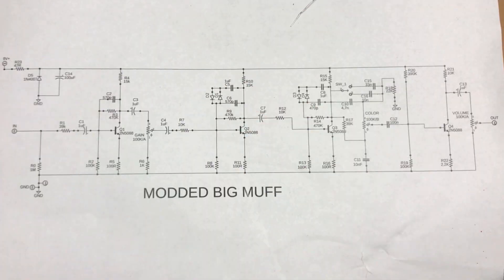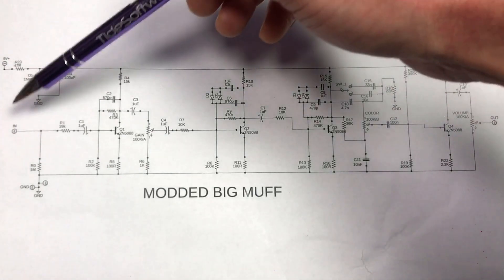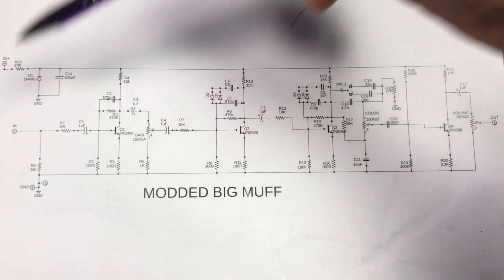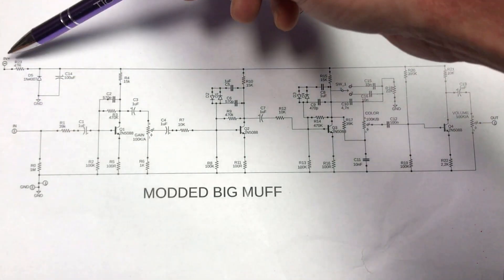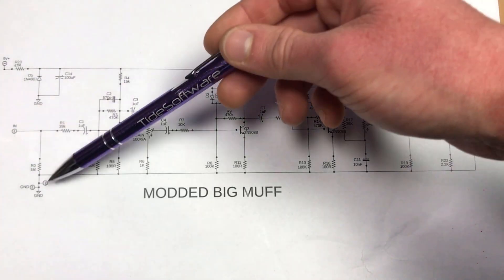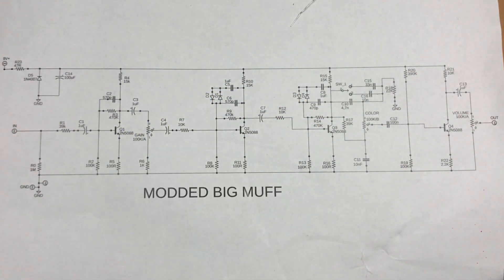So here's an example of a guitar pedal circuit and all the lines represent connections between parts. Here we have our input signal from guitar and output to amp. Here we have our positive rail from power supply and negative rail, also called ground or just GND.